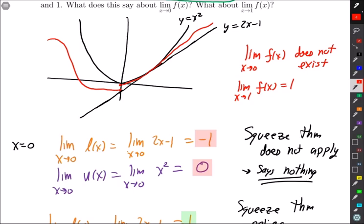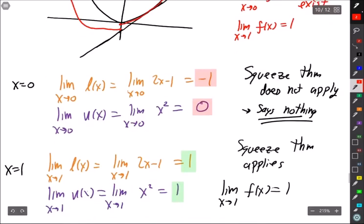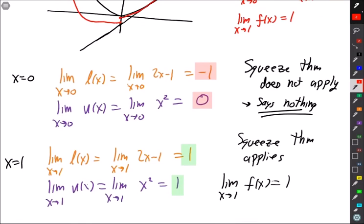So even though we had the inequalities, we didn't have the matching limit at 0 so we could not conclude the limit existed and equaled some number. At 1, however, we did have matching numbers and so we could conclude from the squeeze theorem the limit had to be 1.